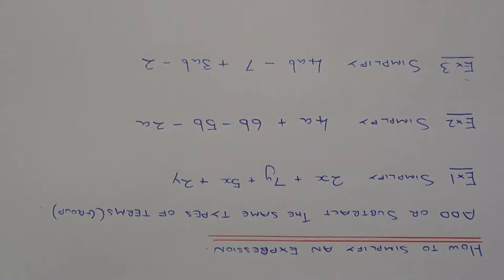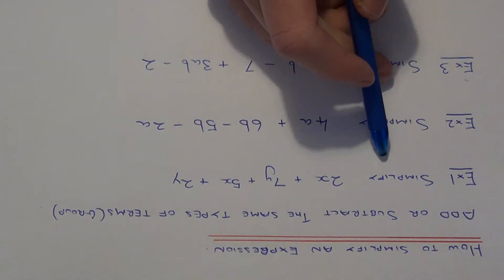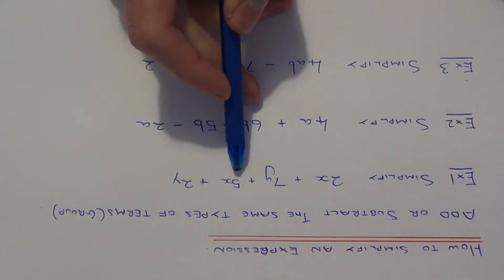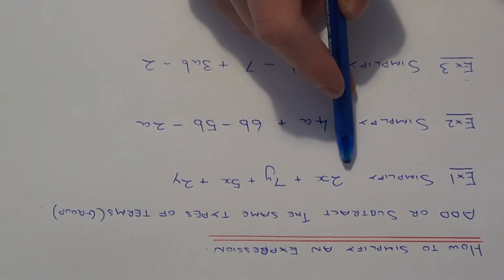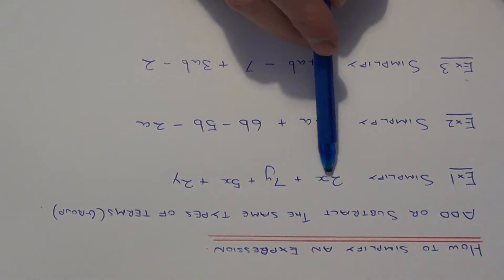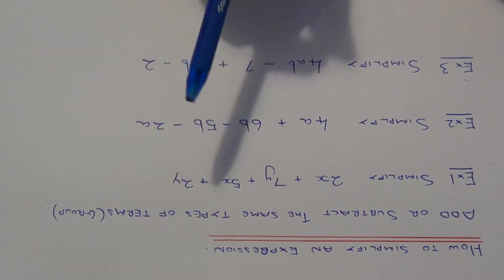So let's look at example 1. We need to simplify 2x add 7y add 5x add 2y. So here we've got 4 terms, and we have 2x terms and 2y terms.